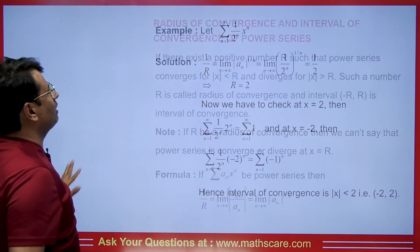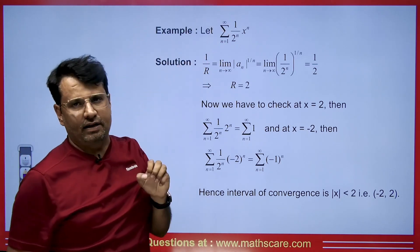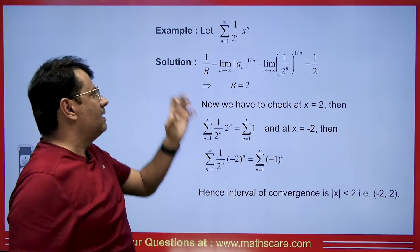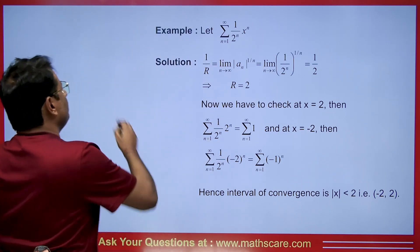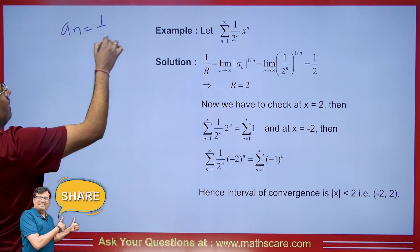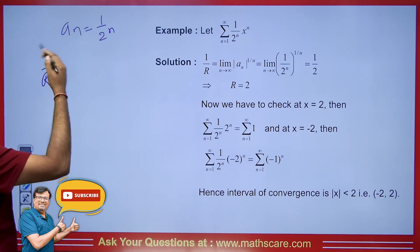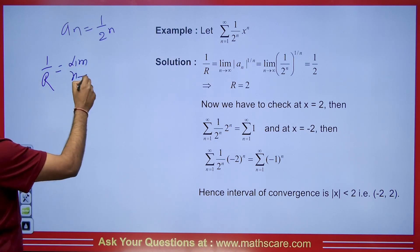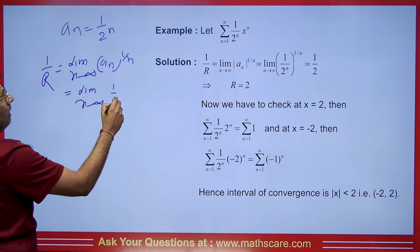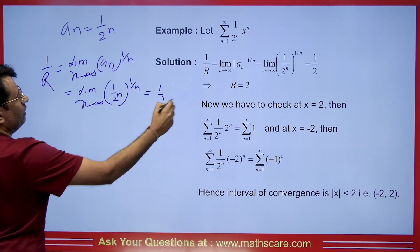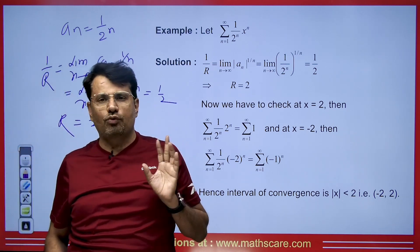Let's say we are given the summation from n=1 to infinity of (1/2ⁿ)xⁿ. We need to find at what values of x this series is convergent, so we calculate the radius of convergence. Here aₙ = 1/2ⁿ. Since there is a power, we apply the Cauchy root test: 1/R = lim(n→∞) |aₙ|^(1/n) = lim(n→∞) (1/2ⁿ)^(1/n) = 1/2. So the radius of convergence R = 2.